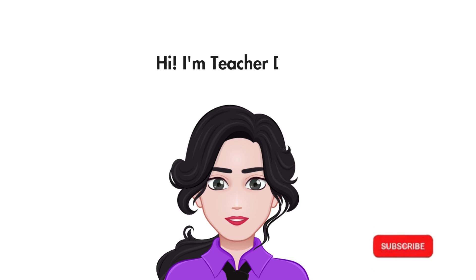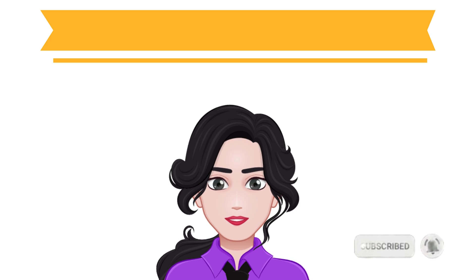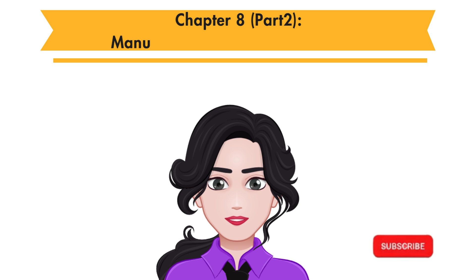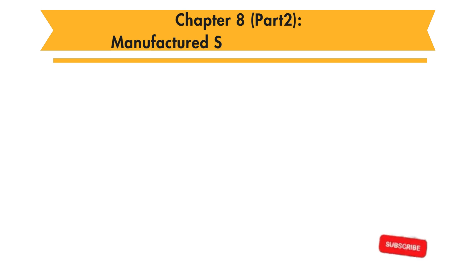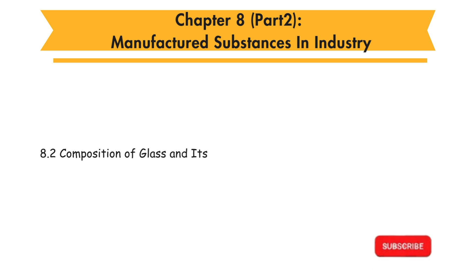Hi, I am Teacher Daisy. Now, let's learn Form 4 Chemistry Chapter 8 Part 2, Manufactured Substances and Industry. In this chapter, you will learn 8.2 Composition of Glass and its Uses.